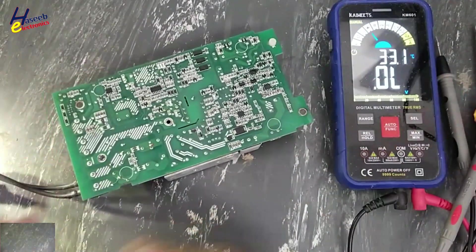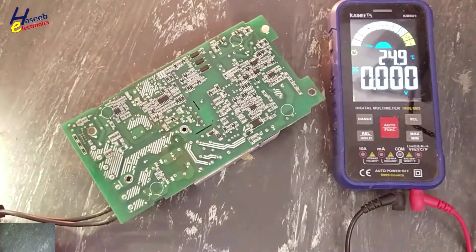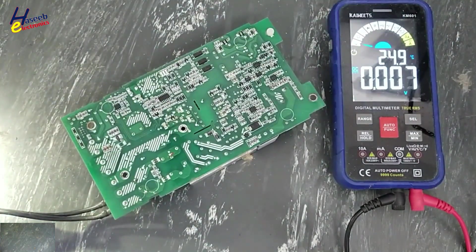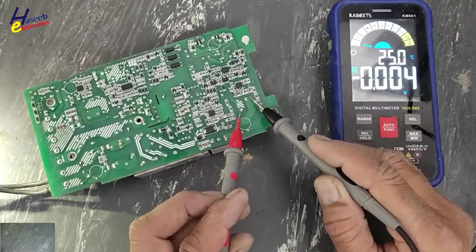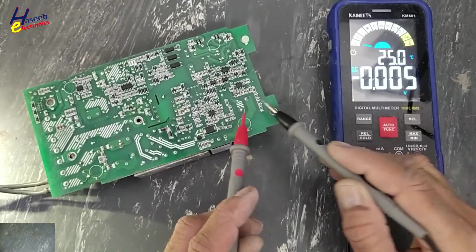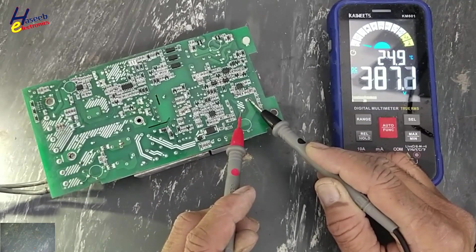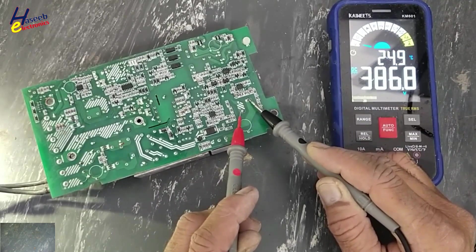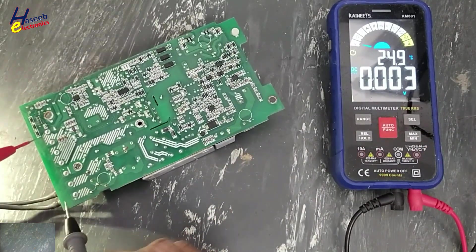Let's supply power. Yes, the PFC circuit started. Now we'll check voltage. DC voltage, 386 volt, 387 volt. That means the PFC circuit is working nice. Let's check output voltage. 23.62.